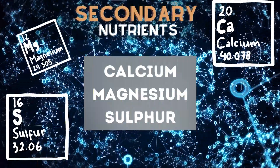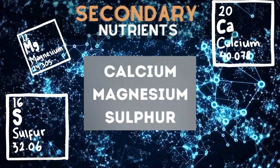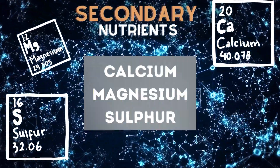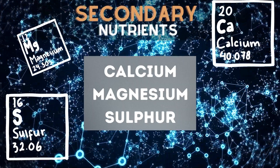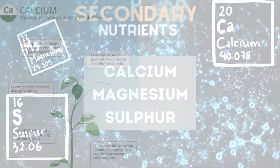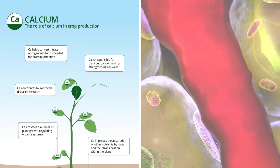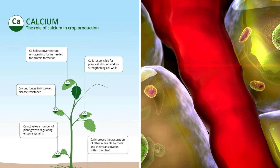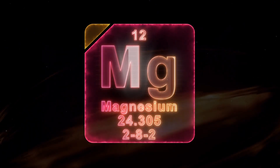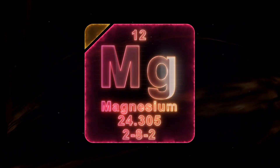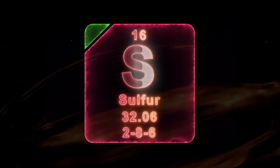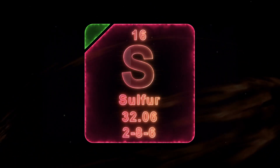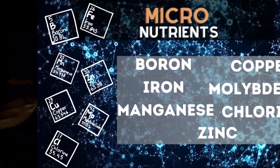Secondary nutrients are required in smaller quantities than primary nutrients. Calcium strengthens cell walls and aids in water movement. Magnesium is a central component of chlorophyll and works as a phosphorus carrier. Sulfur is a major building block of both amino acids and chlorophyll.